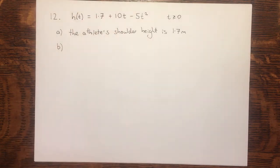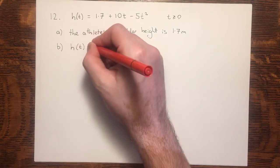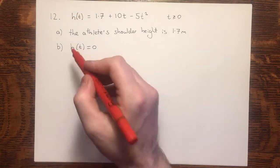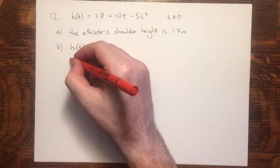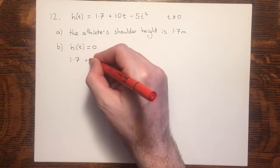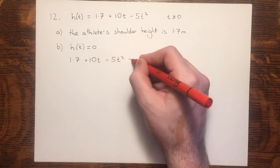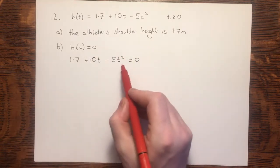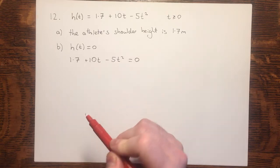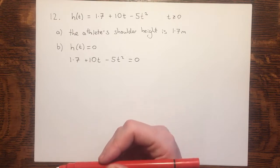In part B, we are asked, use the model to calculate how many seconds after launch the shot put hits the ground. Let's try and turn that into mathematical terms. When it hits the ground, its height would be 0. So, if the height is 0, all of this would equal 0. If we solve this, we will find the time at which the height is 0, in other words, the time before it hits the ground.